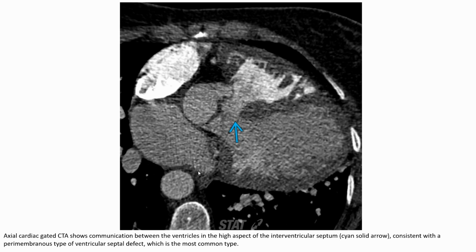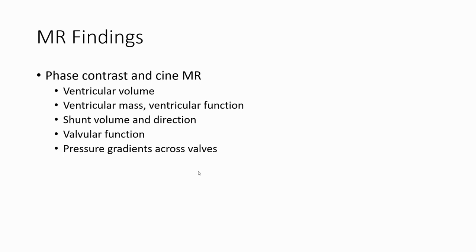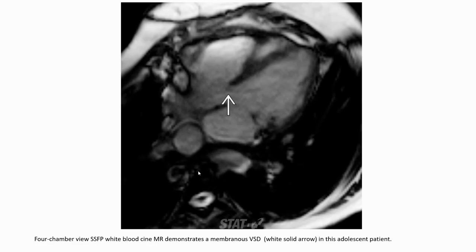MRI, with contrast and cine sequences, can assess ventricular volume, ventricular mass, ventricular function, shunt volume and direction, valvular function, pressure gradient, cross-sectional area, whole chamber view, and SSFP bright blood signal.